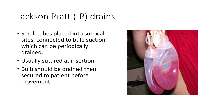Jackson Pratt drains are used for smaller surgeries that have a little bit of drainage — for example, a small operation on the neck or somewhere else. An external drain helps facilitate drainage out of that area.